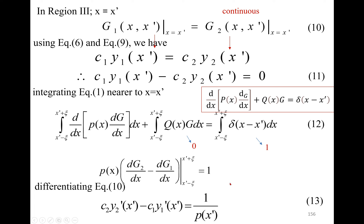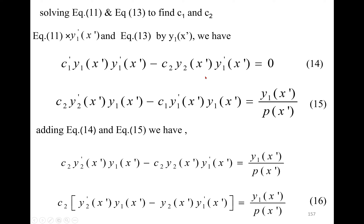We have already discussed the properties of Green's function: G₁ and G₂ are continuous, whereas their derivatives are discontinuous. Now, differentiating equation 10 gives dG₂/dx = C₂·y₂'(x') and dG₁/dx = C₁·y₁'(x'). To solve equations 11 and 13 for C₁ and C₂, multiply equation 11 by y₁'(x') and equation 13 by y₁(x') — then add them together.